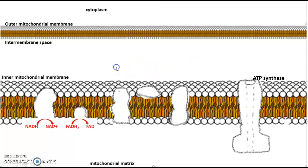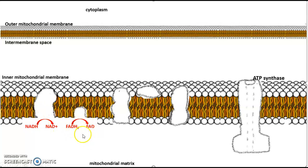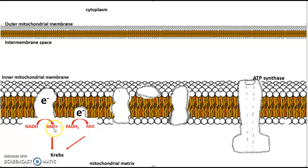NADH and FADH2 bring their electrons from the Krebs cycle to the electron transport chain and drop off those electrons to these electron carriers. The electron carriers are very electronegative, so the electrons move willingly from NADH and FADH2 to these carriers. That regenerates NAD+ and FAD, which then go back to the Krebs cycle to pick up more electrons from the next glucose coming down the pipeline.